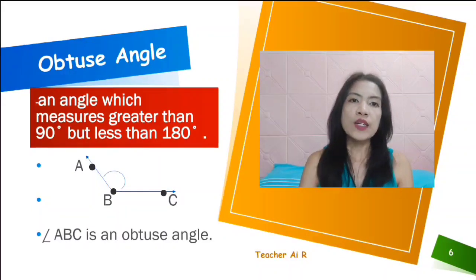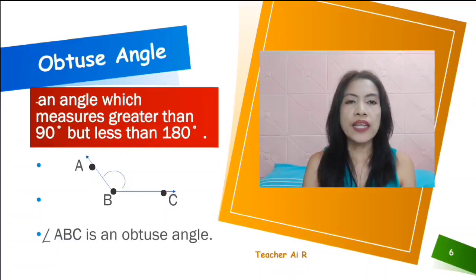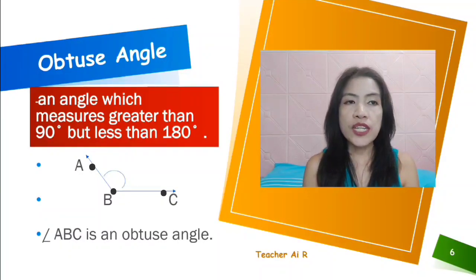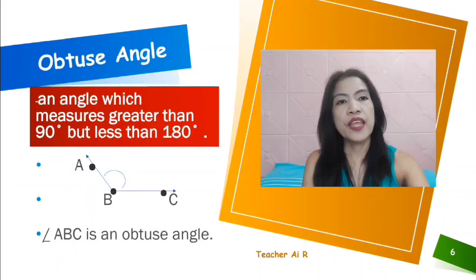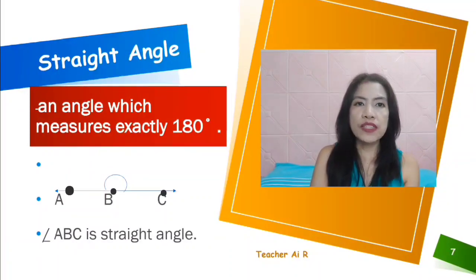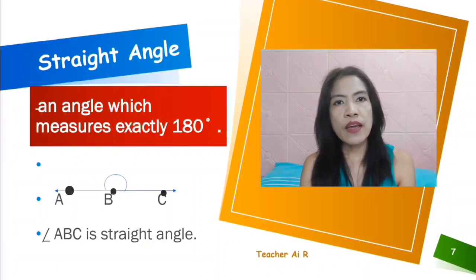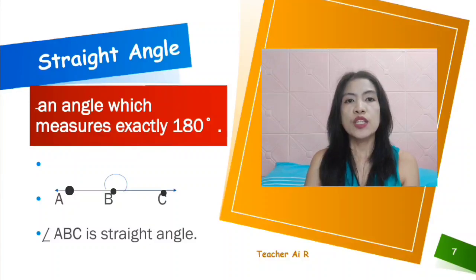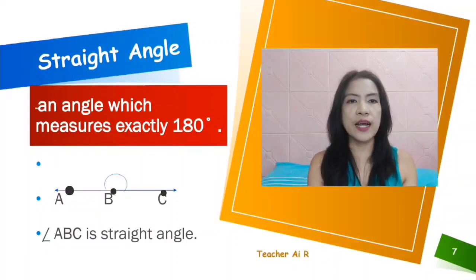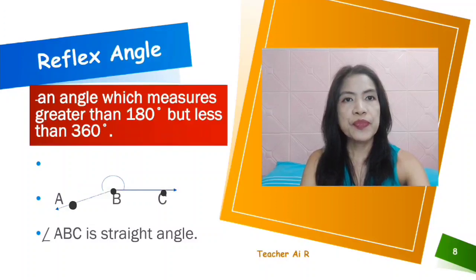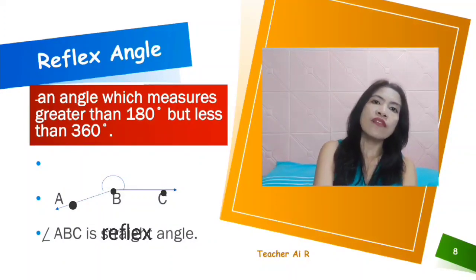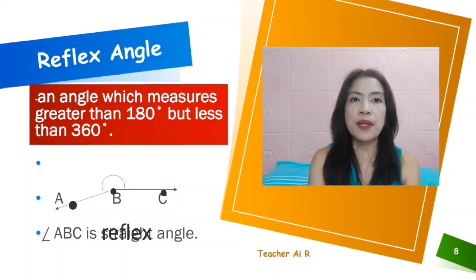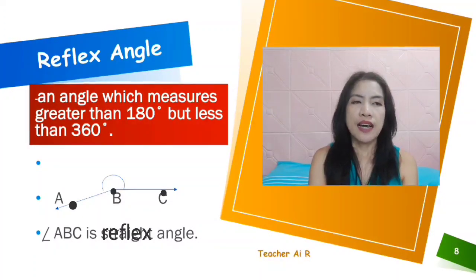So, the right angle is 90 degrees, but the obtuse angle is greater than 90 but less than 180 degrees. We also have the straight angle — an angle which measures exactly 180 degrees, it's completely flat. Next, we also have the reflex angle — an angle which measures greater than 180 but less than 360 degrees.